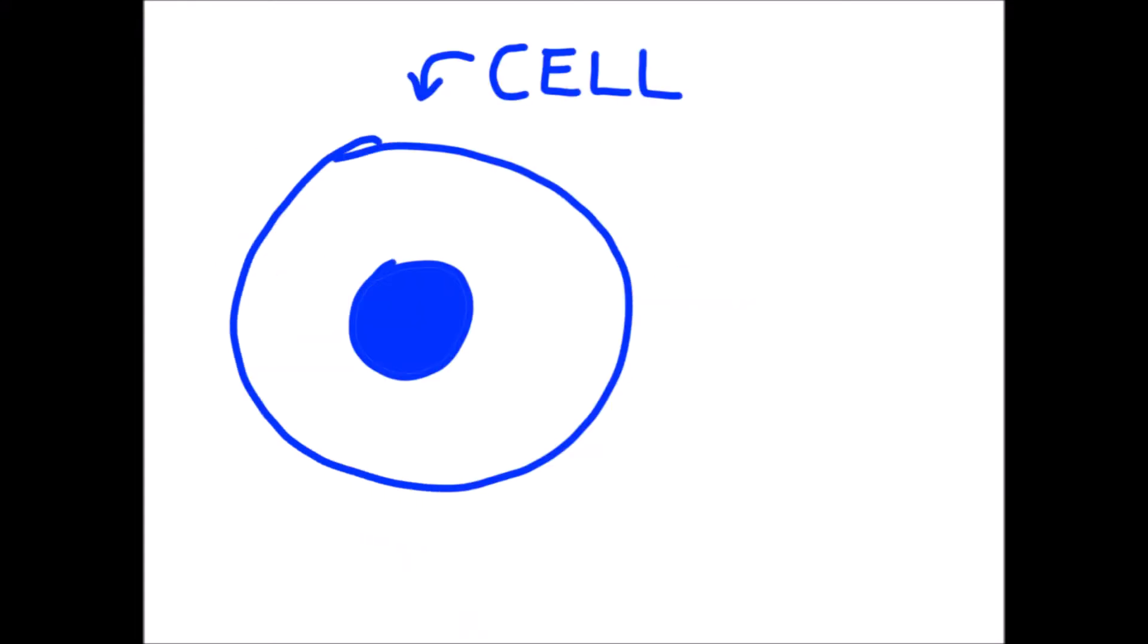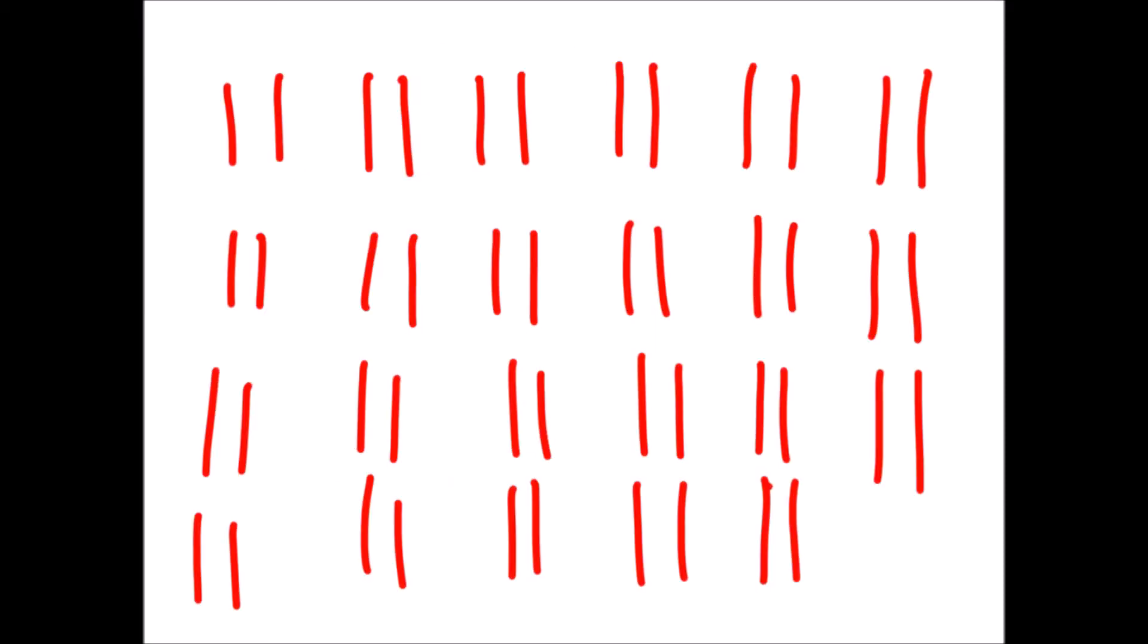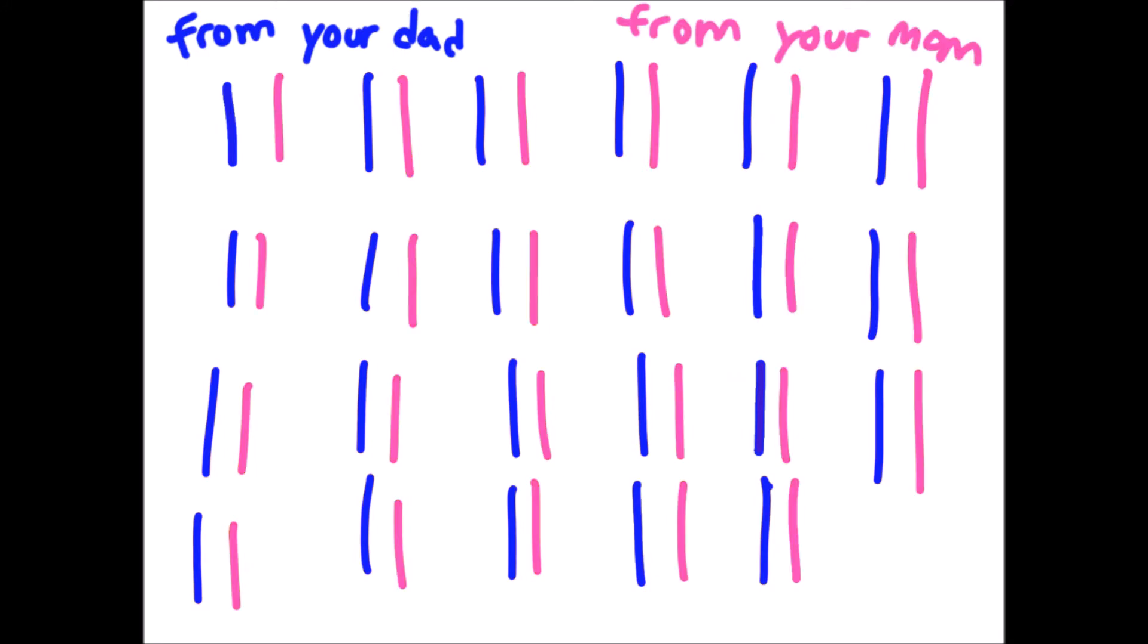So, humans are made up of cells. The middle part of cells is called a nucleus, and inside the nucleus are these things called chromosomes. Every human, well almost every human, has 46 chromosomes, or 23 pairs. One chromosome in a pair is from your dad, and the other is from your mom.